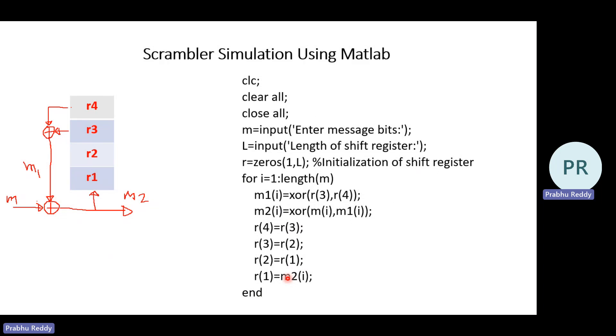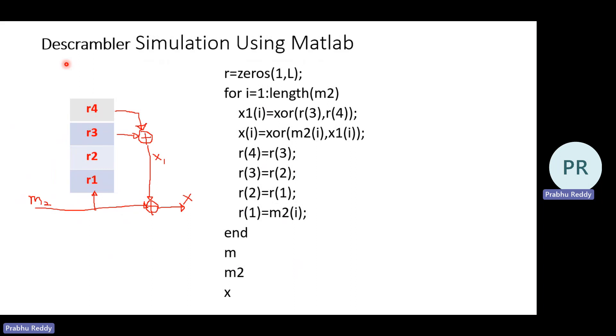Now we will see how the descrambling can be done. Please keep that in mind. Scrambling will be done at transmitter end and descrambling will be done at the receiver end as a part of which M2 is my input to the descrambler and it is given to R1, R2, R3, R4 like this. So this is an inverse operation, inverse operation what we have done in the transmitter. These two once again XOR and this output, whatever input we received is XOR with X1. So this is a descrambler diagram.